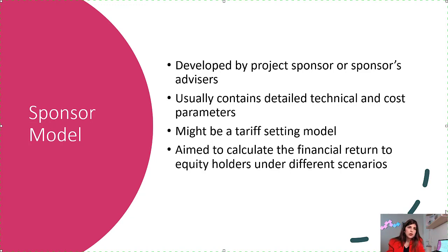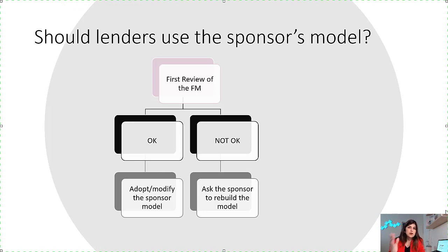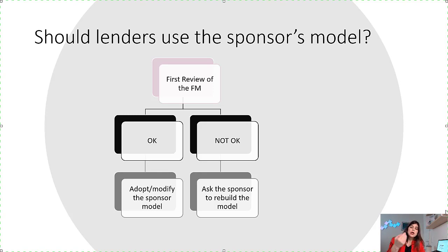So there is another version of the model sent from the sponsor to the lenders. When lenders receive that model, they review it to understand whether they want to adopt it and make it their own, or build it from scratch. Having two separate versions is difficult and costly, especially if sponsors also want to audit their end. So the best way is to have one version of the model for both lenders and sponsors.